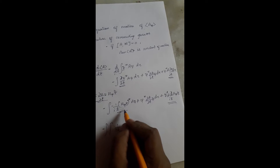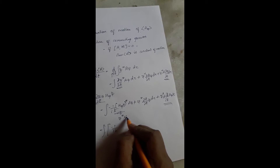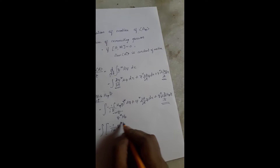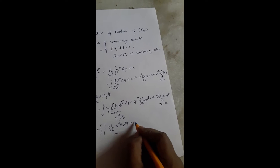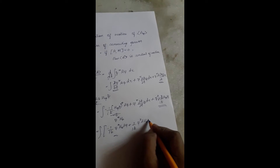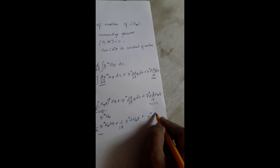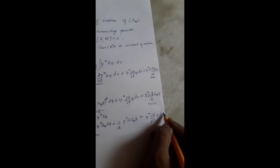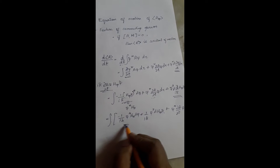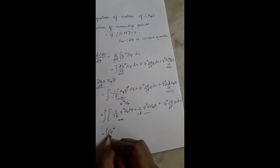Since the Hamiltonian Ĥ is a self-adjoint operator, we can write the first term as ψ* Ĥ. So we have ψ* Ĥ A ψ as the first term, ψ* A Ĥ ψ as the third term, and the second term as it is. Combining the first and third terms, we write ψ* (1/iℏ) times the difference.